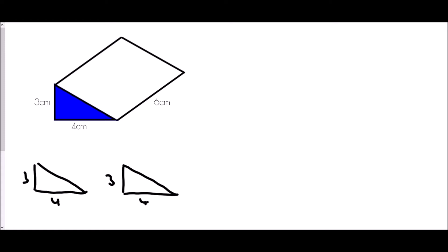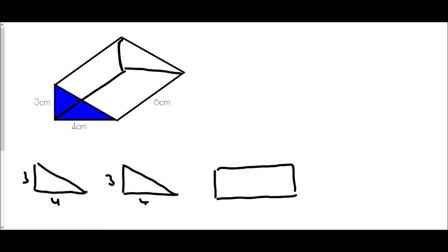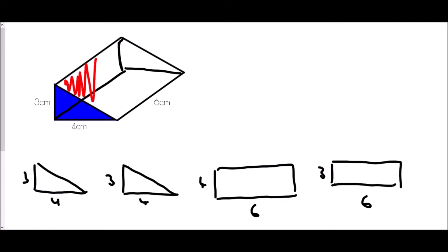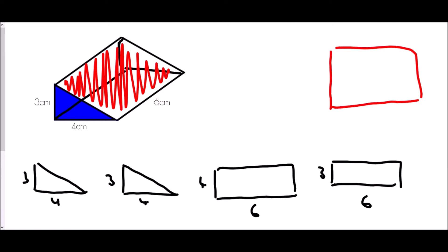Then we need to think about the faces at the bottom, at the back, and the one coming across the top. The bottom is a rectangle with a width of six and a height of four. The back of the shape is another rectangle, six along and three up. And then finally there's another rectangle — the one I'm now coloring in red — which also has a width of six.